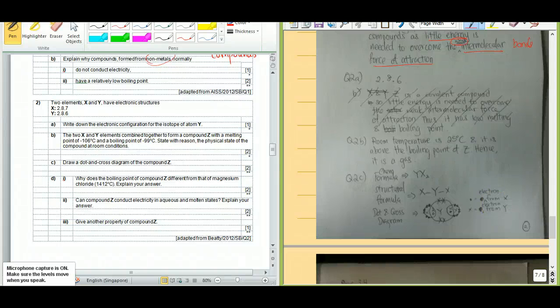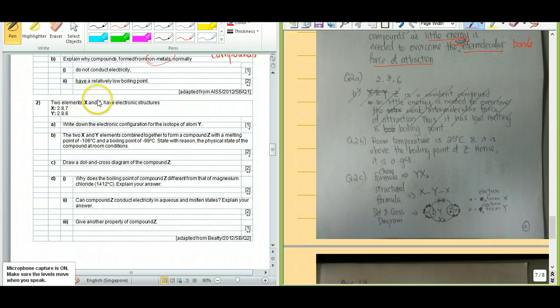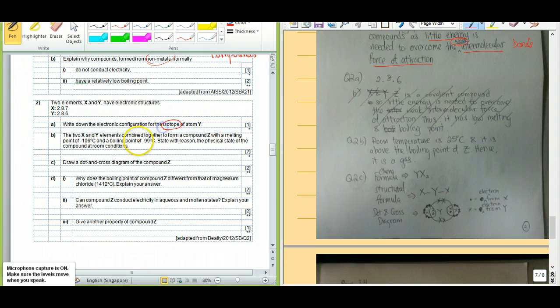Bonding Assay Question 2. We have two elements, X and Y, with electronic configuration or electronic structure 287 and 286. Write the electronic configuration for the isotope of atom Y.